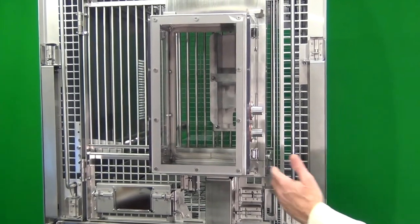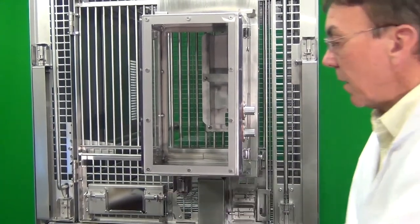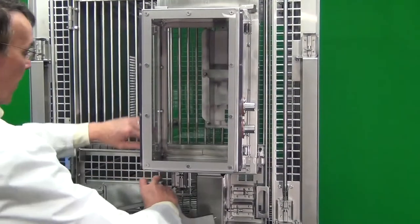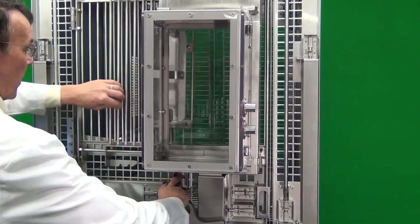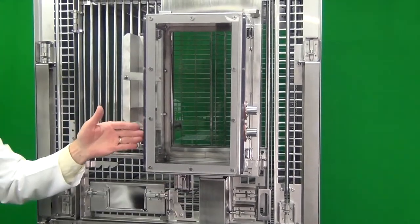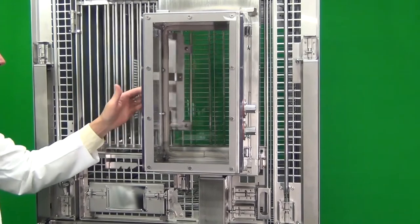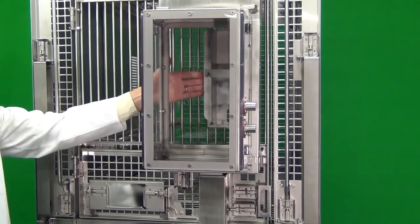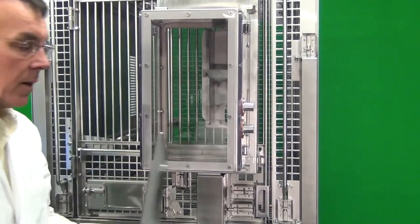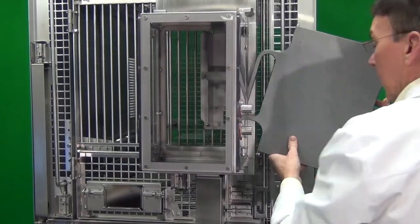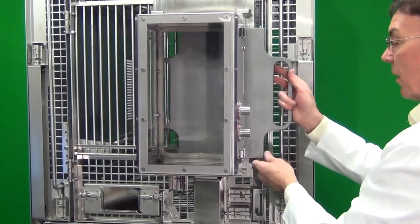The sequence of events to load the primate into the anesthesia box would be: opening the primate cage door, either squeezing the primate or treating him into the box, closing and locking the door, and then inserting the anesthesia box door, which is going to be used to create the seal.